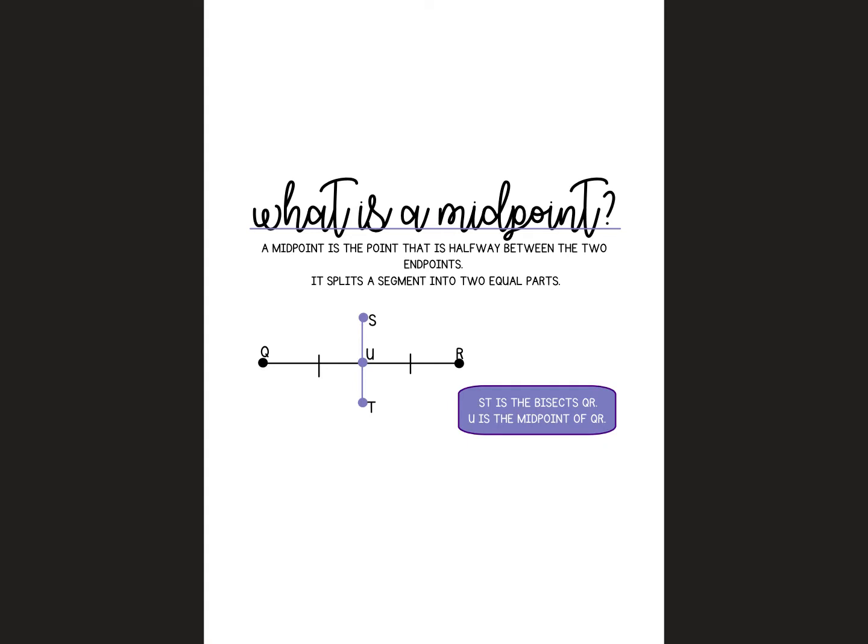Another word we often hear associated with bisector is midpoint, and it's exactly what it sounds like. It is the middle point of a segment, so it's halfway between the two endpoints. In this diagram right here, U is the midpoint. You can see these blue marks are saying each half is the same length. And then right here, ST would be our bisector.